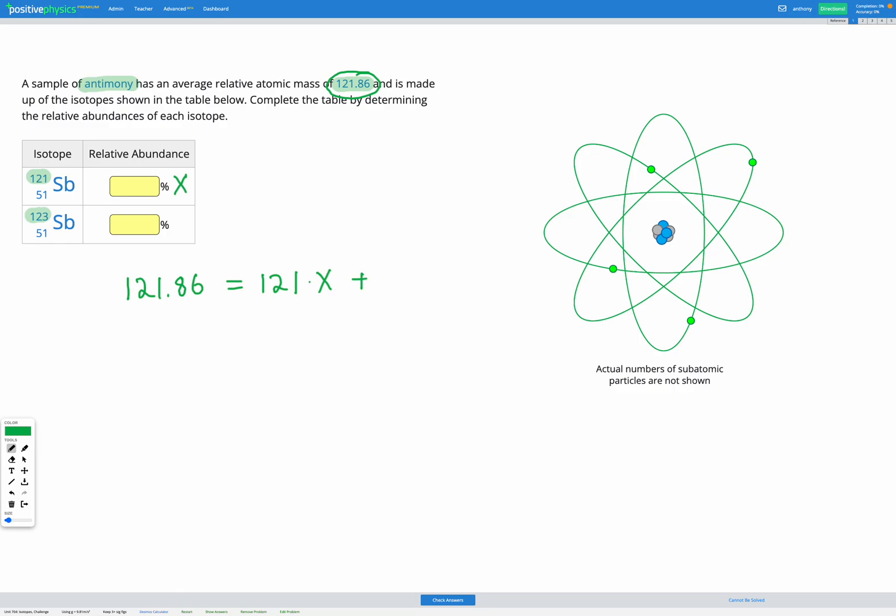Okay, now I need to add the mass number of the second isotope, 123, multiplied by the relative abundance. Now again, I don't know this one. So I could give it a symbol like y, but then I'm going to have two unknown variables, x and y, in my equation. Now there's something else, a trick that I can do, since I know that these two relative abundances here are going to add up together to give me 100. So I know that if the first one is x, the second one is going to be 100 minus x.